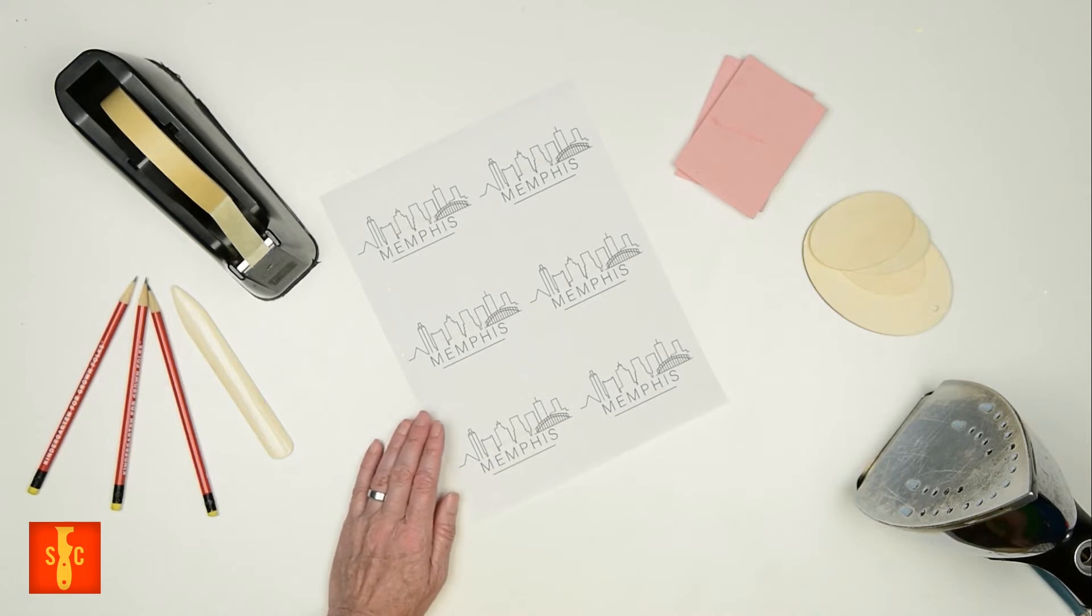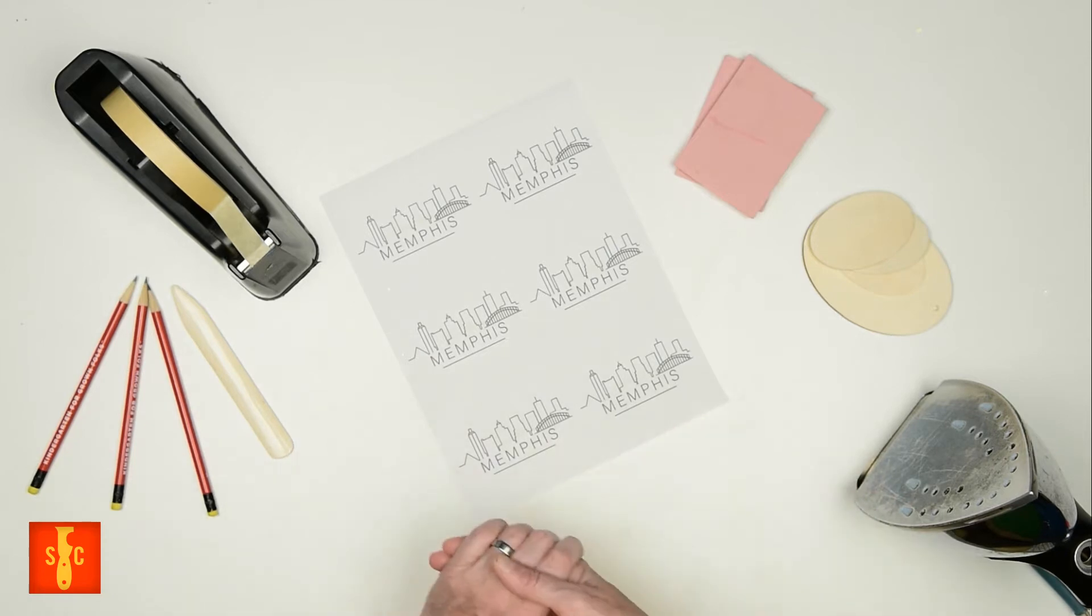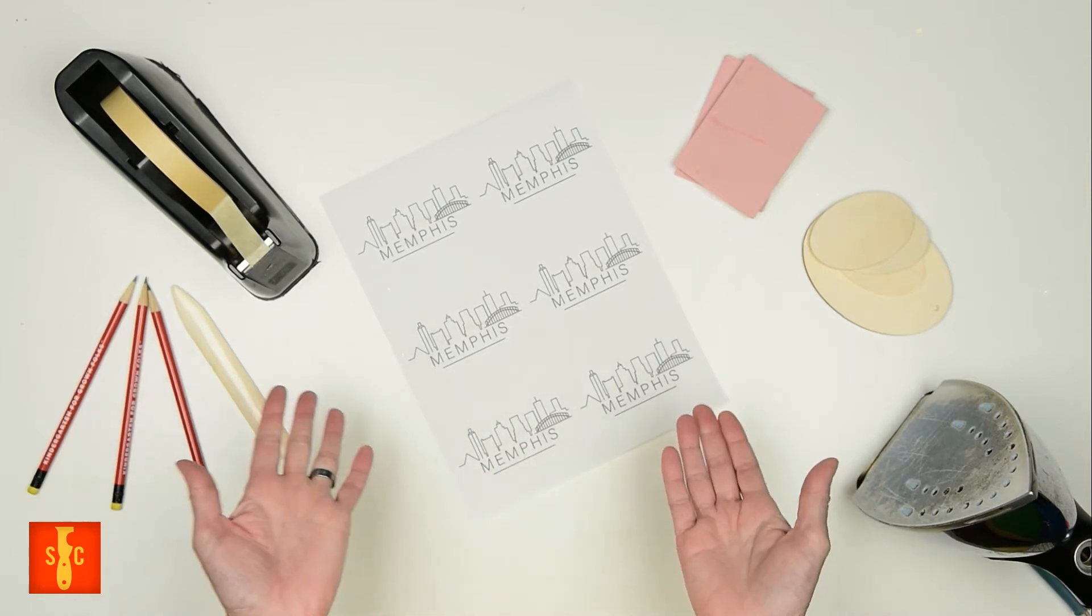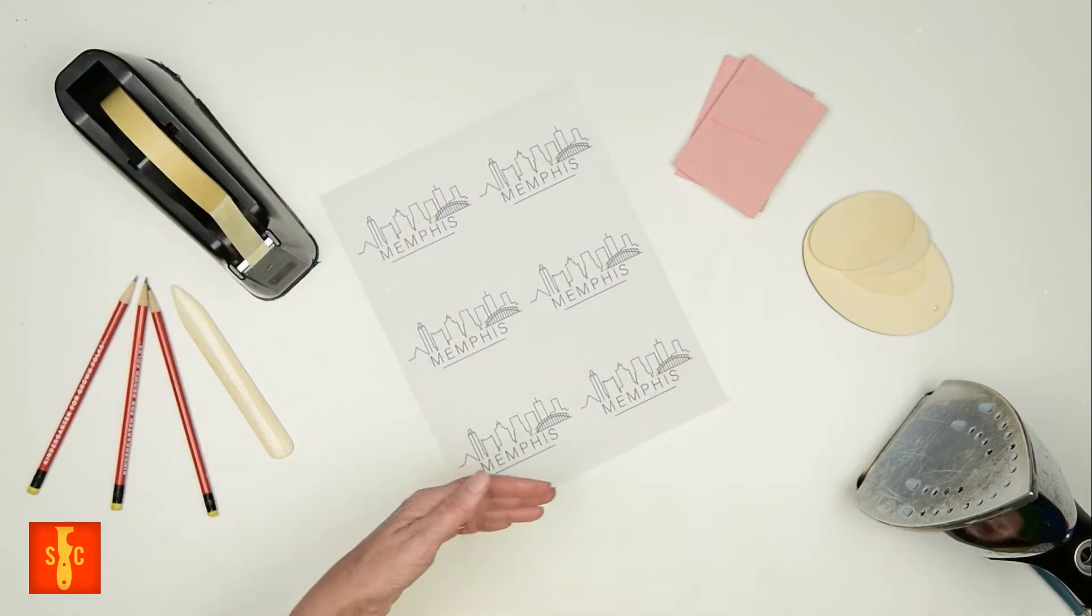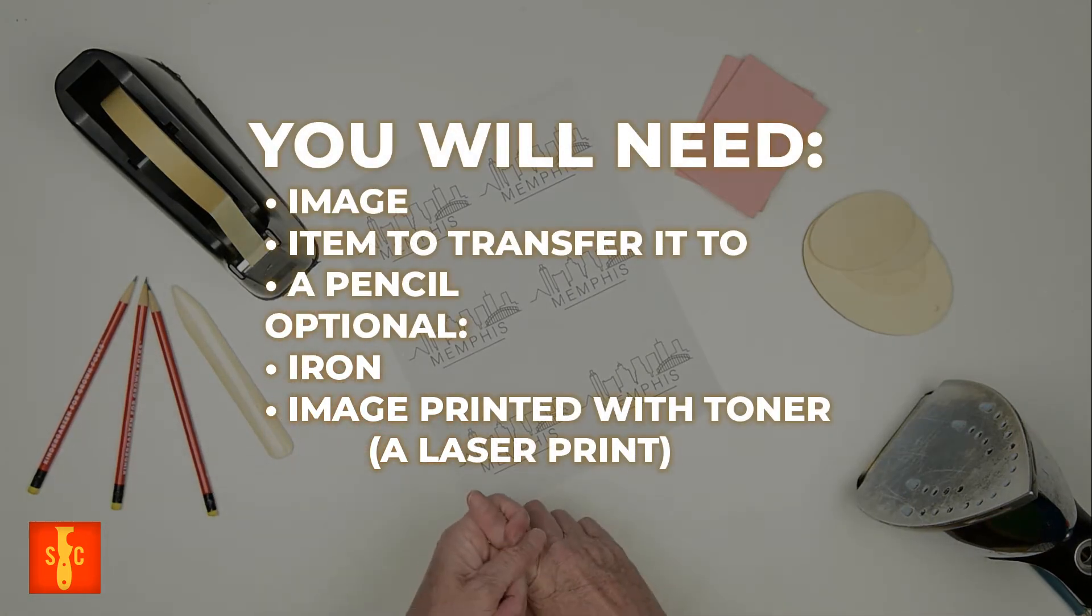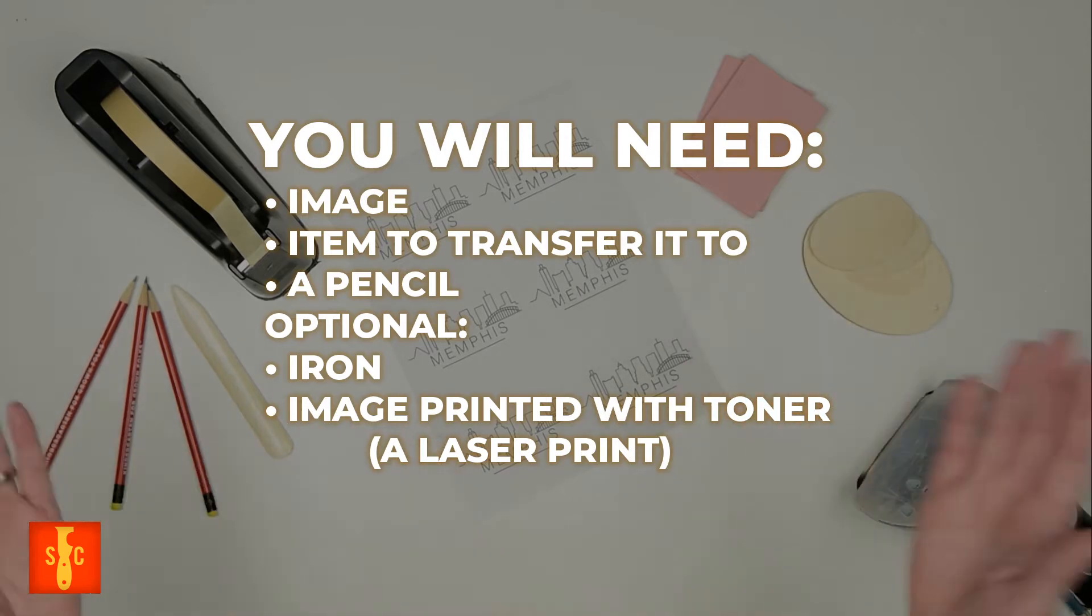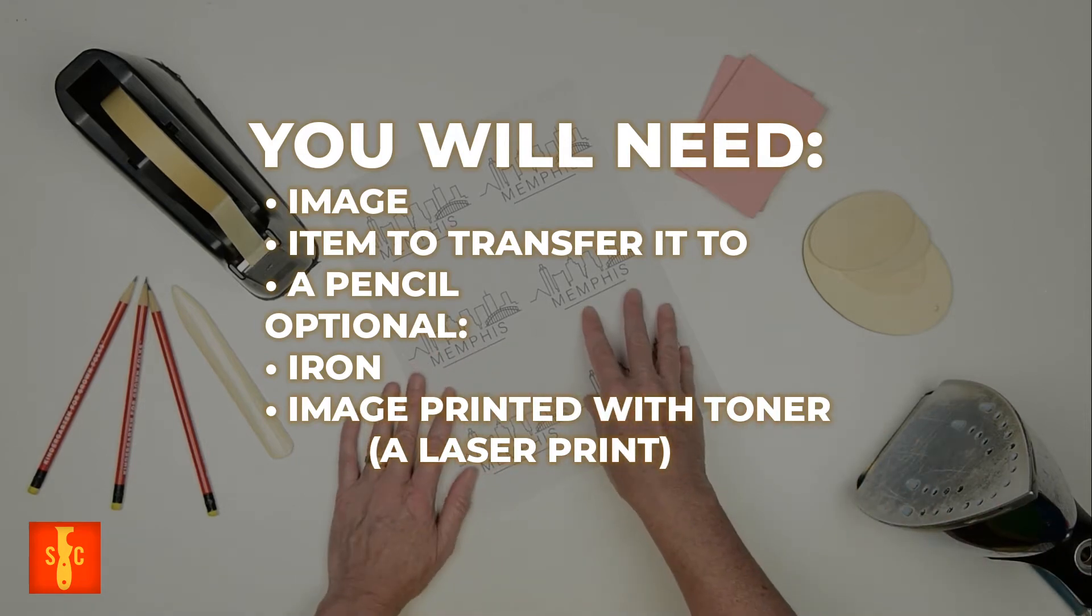We've been using this simple pencil transfer technique for forever in our workshops. People are always surprised and a little delighted when I show this process as part of a workshop. So I thought I'd share it with y'all. So here's what you're going to need. For materials for our first two methods, you're going to need an image, an item to transfer it to, and a pencil. Simple. For method two, I'm going to show you how to use an iron and you'll need an image printed with toner.